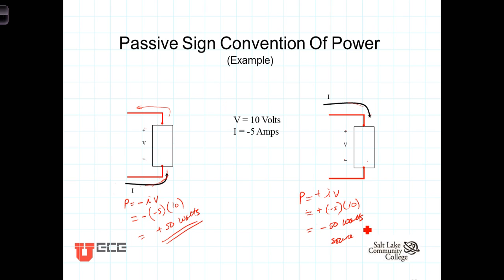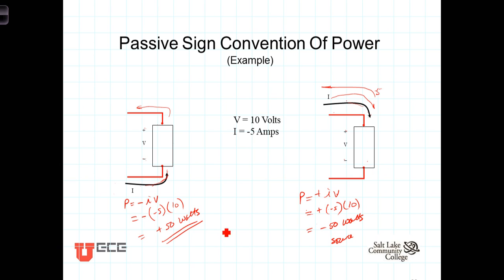The negative sign means the current flowing in the referenced direction is negative 5 amps, which in reality tells us we have 5 amps flowing in the opposite direction — leaving the positive terminal and entering the negative terminal. So this device is a source because its power is negative, while the previous device is a load because the power associated with it is positive.